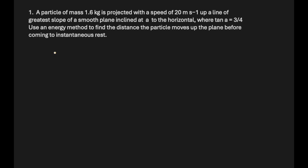Question 1: A particle of mass 1.6 kg is projected with a speed of 20 meters per second up the line of greatest slope of a smooth plane inclined at angle a to the horizontal, where tan a = 3/4.